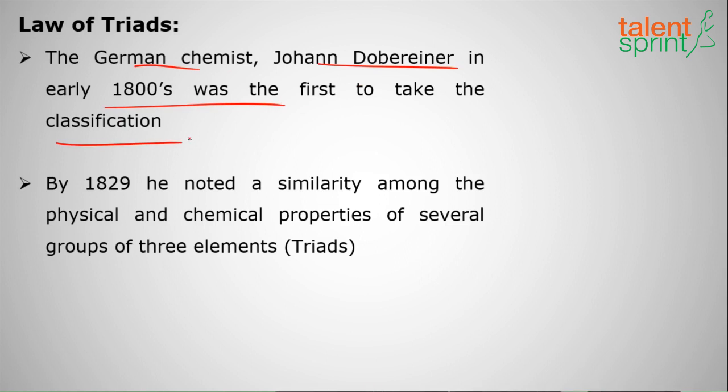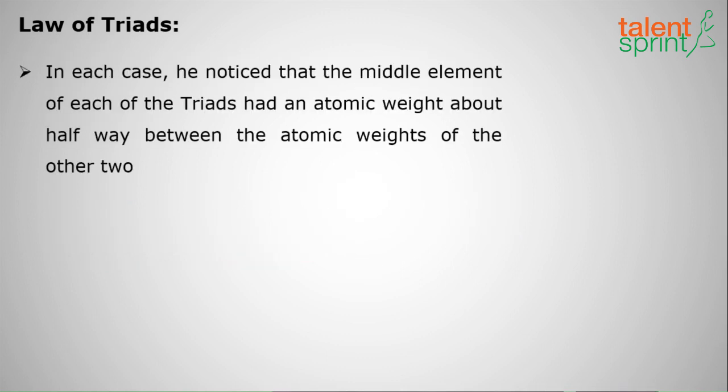By 1829, he noted a similarity among the physical and chemical properties of several groups of three elements. That's why it's called the Law of Triads - three elements were having the same properties.